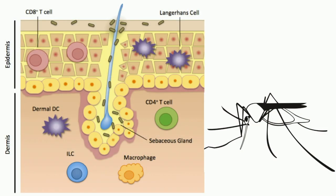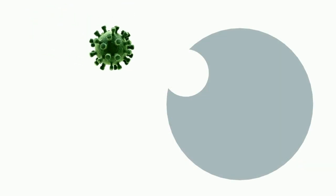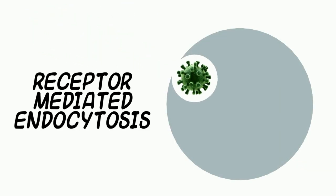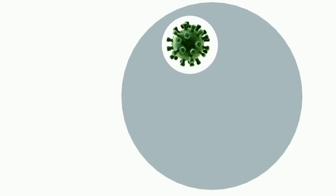Once a person is bitten, it is thought that the initial West Nile virus infection occurs in the skin-Langerhans dendritic cells, which are part of the skin immune system. Here, the virus enters the dendritic cell through receptor-mediated endocytosis, in which the virus exploits specific cell surface receptors to attach and enter the cell.